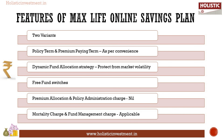First, features of MaxLife Online Savings Plan. The plan offers two variants. You have the choice to choose the policy term and premium paying term. Choose from 11 fund options as per risk appetite. You can safeguard your investments from market volatility by choosing the dynamic fund allocation investment strategy. There is no limit on the number of switches between funds done in a policy year. There is no premium allocation charge and policy administration charge under the MaxLife Online Savings Plan. There will be only mortality and fund management charges.